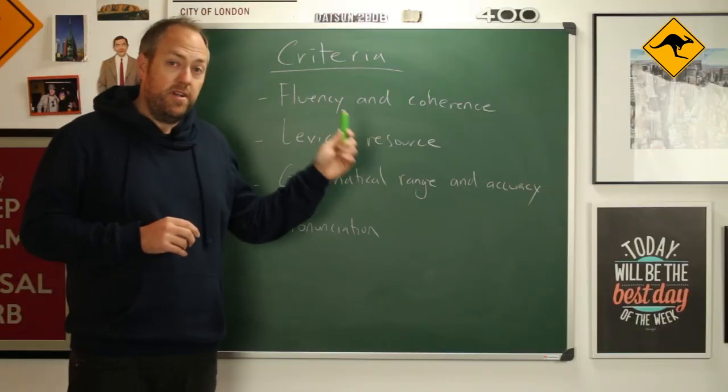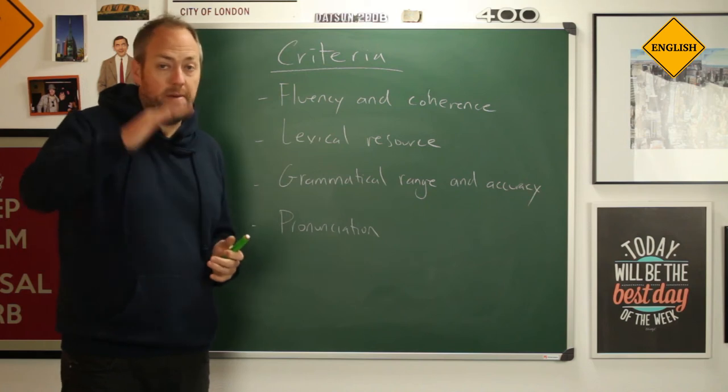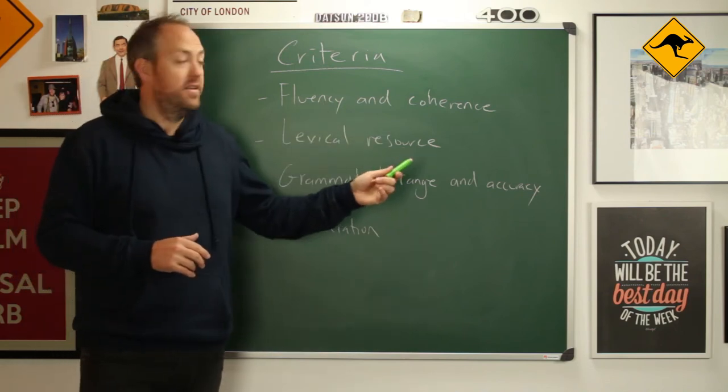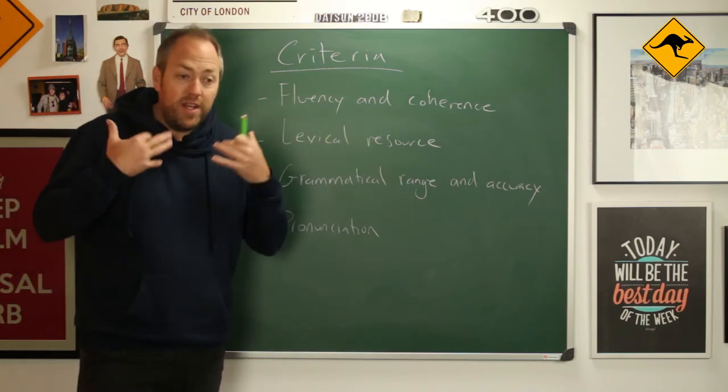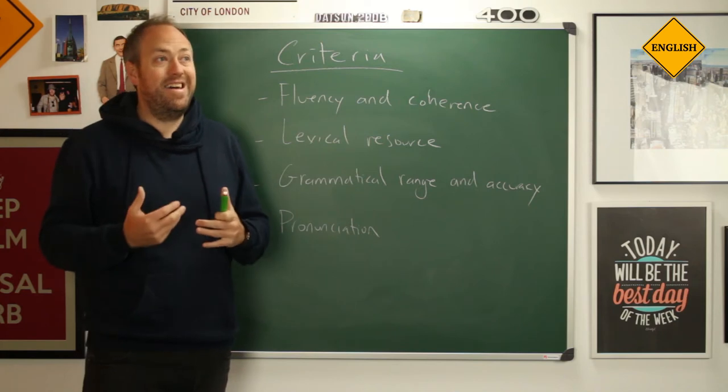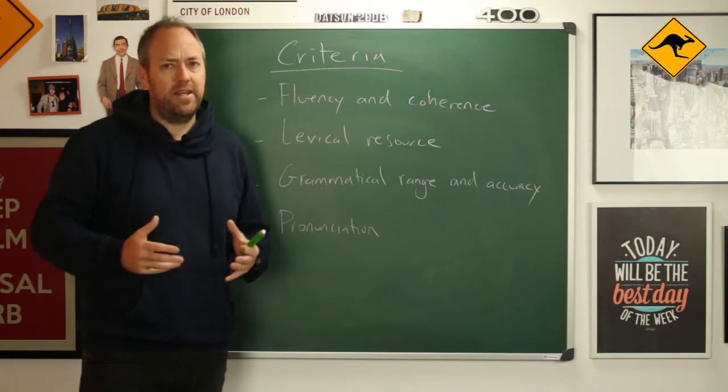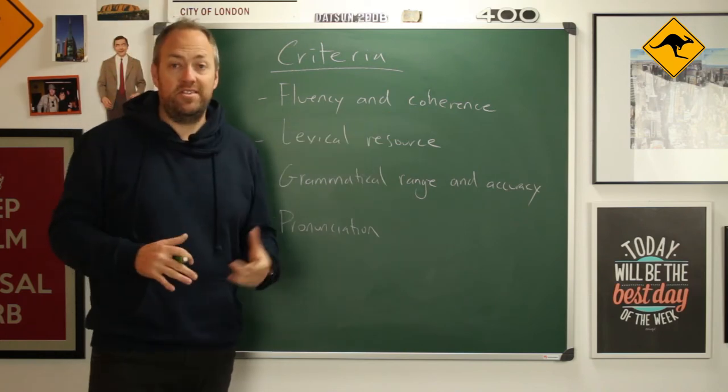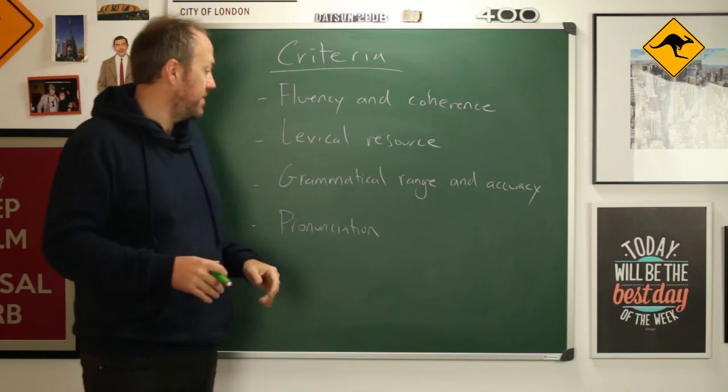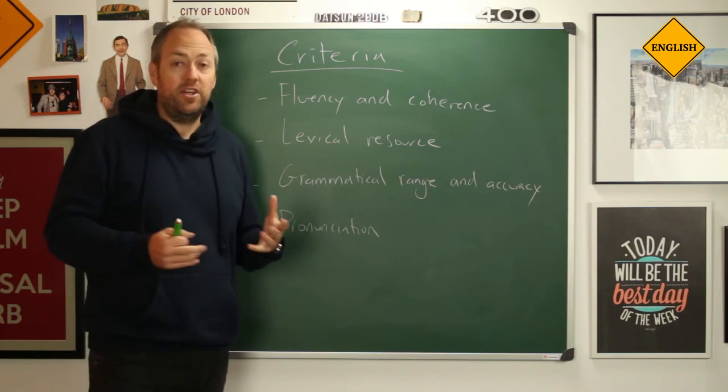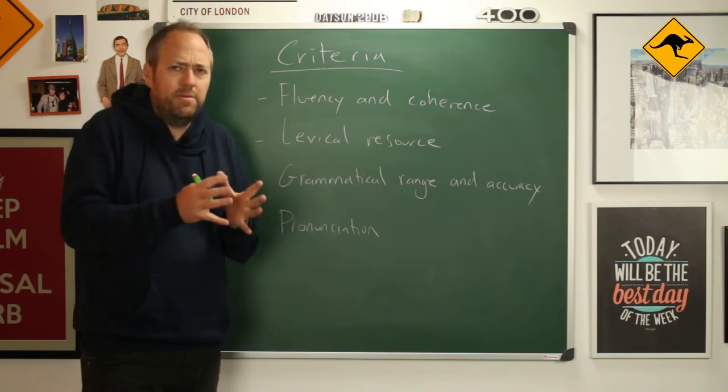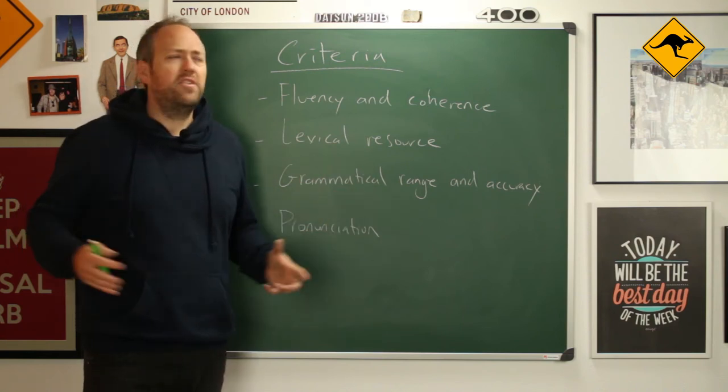These are the criteria that Cambridge use to assess your band in the exam. The first one is fluency and coherence. Fluency: does your English flow like this, or do you have lots of pauses and fillers where you have to think a lot before you can make sentences? This is your fluency. And your coherence: can I understand what you're saying, does it make sense to me? The second one is the lexical resource, so basically your vocabulary. Do you have to repeat the same words a lot because you have a limited vocabulary, or are you very expressive and you know lots of synonyms or other words that make your English speaking more interesting?